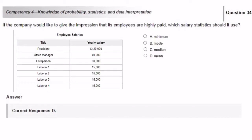If the company would like to give the impression that its employees are highly paid, which salary statistics should it use? Answer choice A, minimum, is the lowest value, or in this case, yearly salary, which is $15,000. Answer choice B, mode. This is the number that appears the most in the data. In this case, it is $15,000 again.